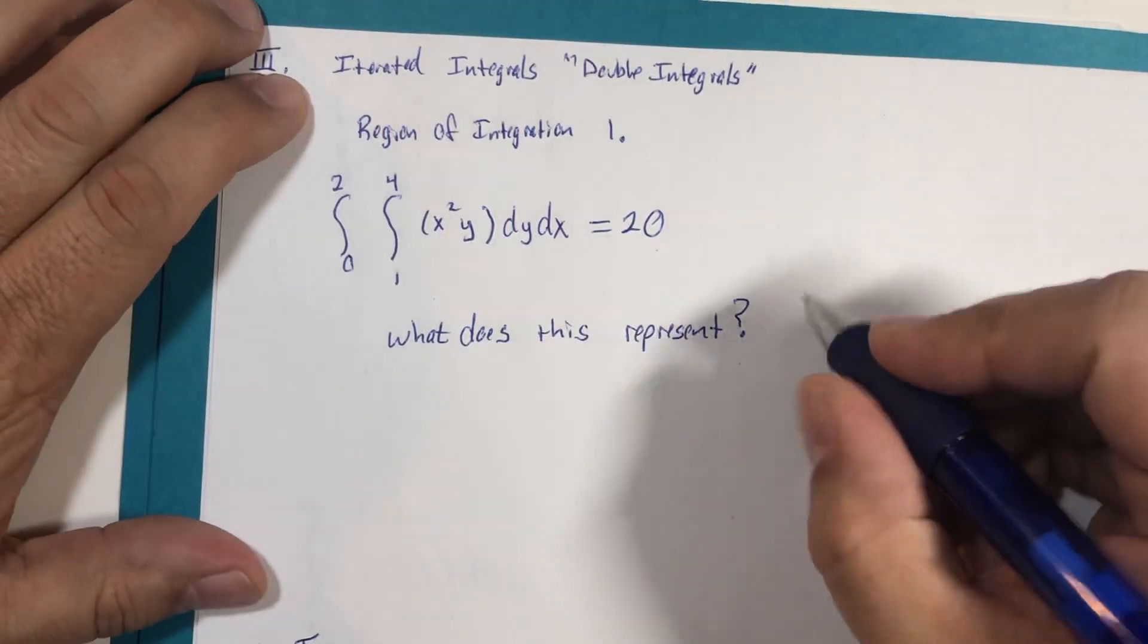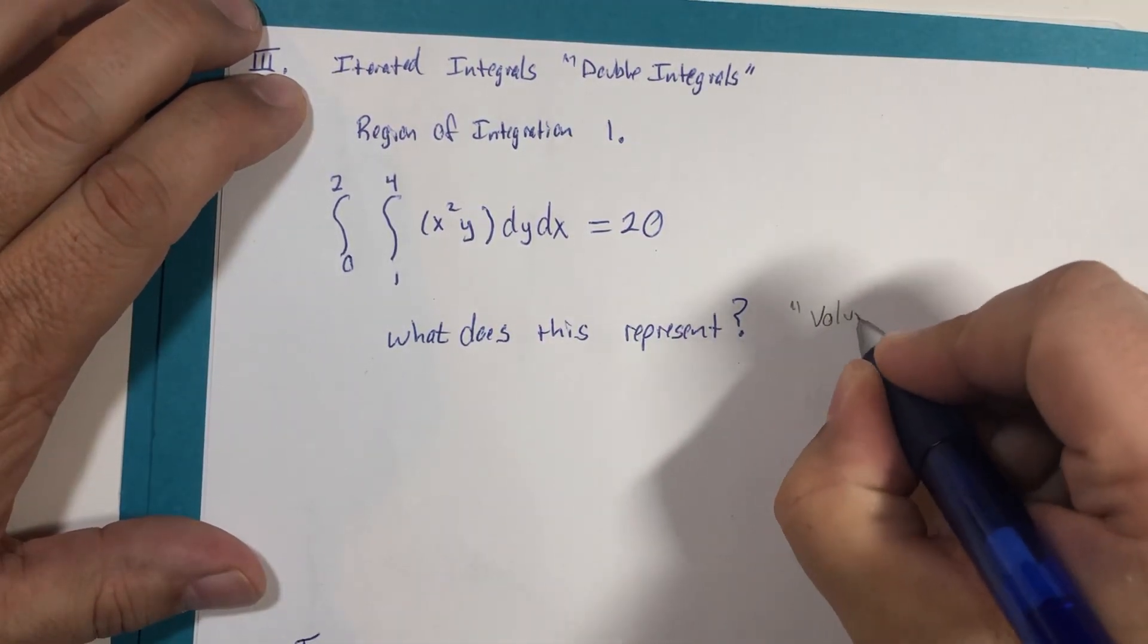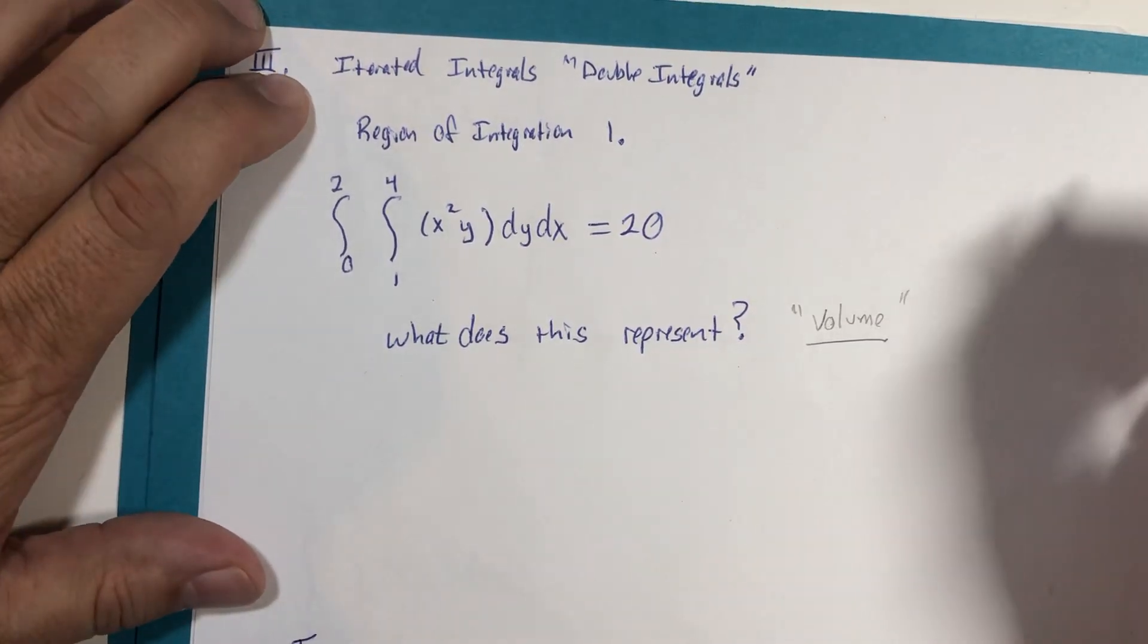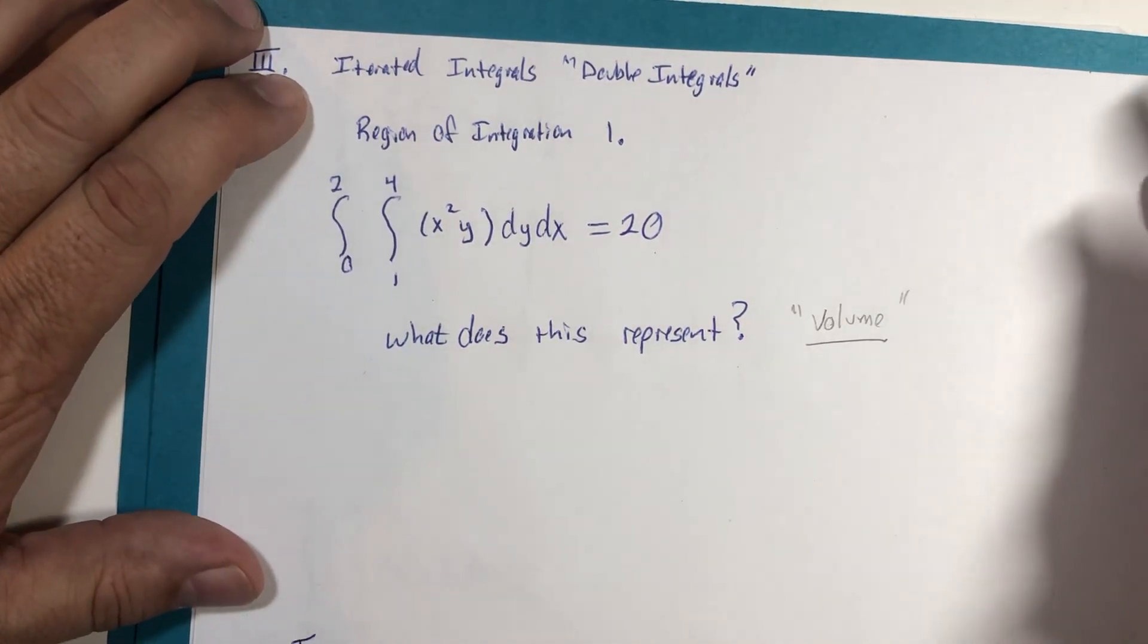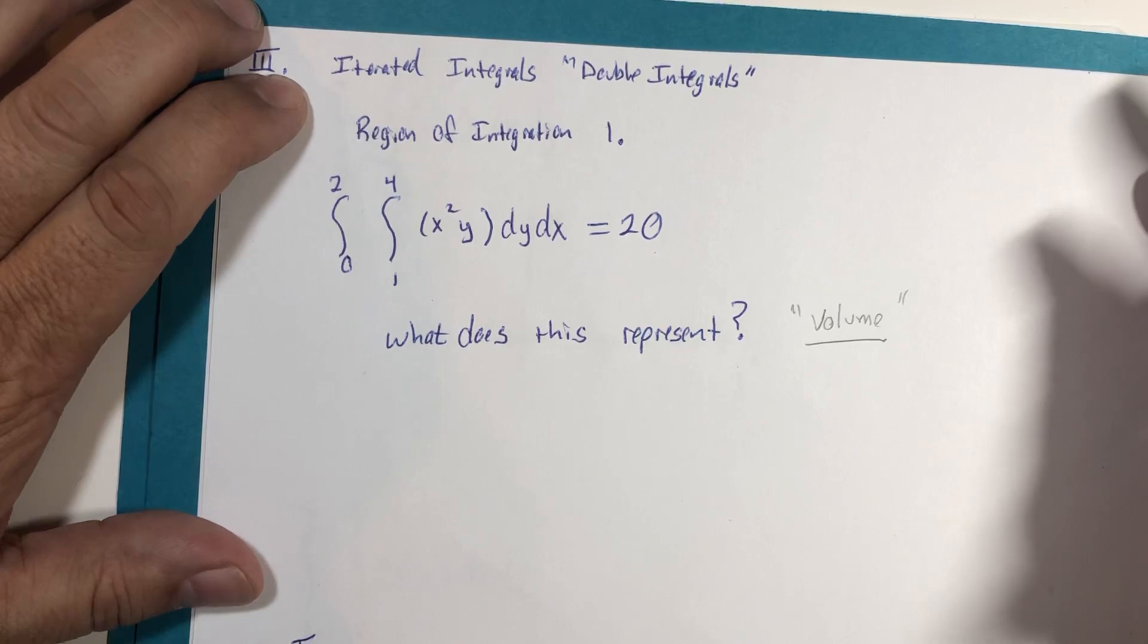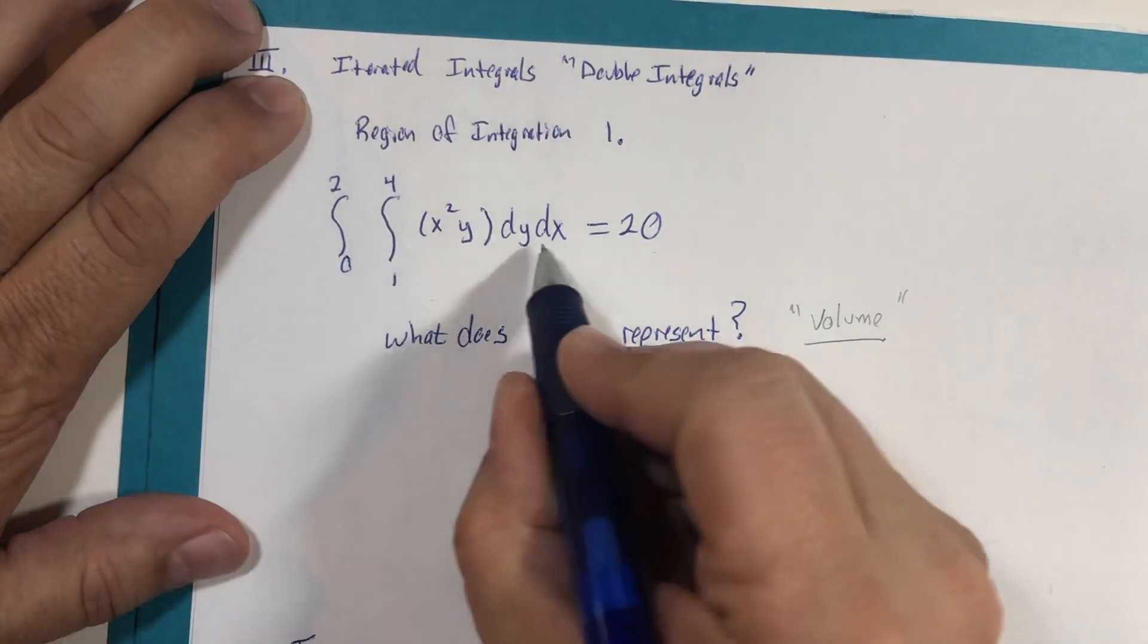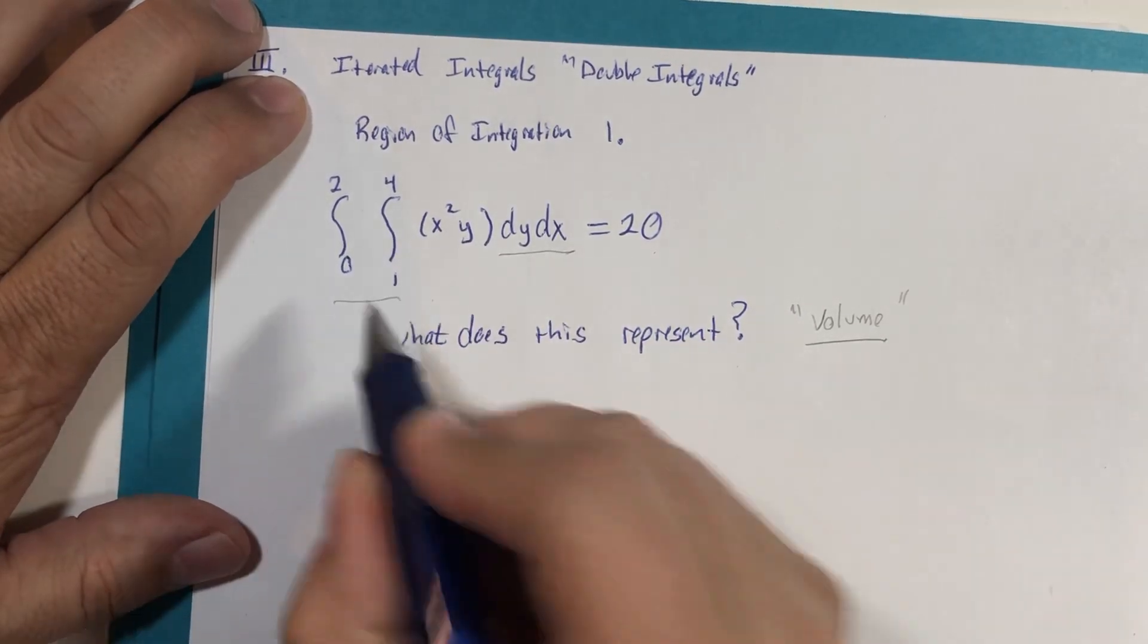Well, if you guessed volume, that would probably be the easiest to understand analogy to the single integral in Calc 1, that this could be volume. We will again find out that it could measure far more than volume. But what we're going to look at is what is the meaning of this and this combined.